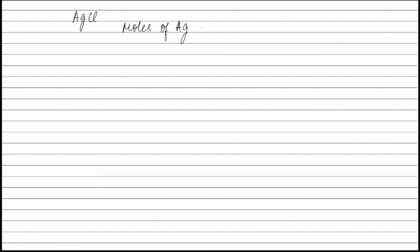The molecular formula of silver chloride is AgCl. Therefore moles of silver equals moles of chlorine. Moles of silver equals weight of silver (3.531g) divided by atomic weight of silver Z, and this equals weight of chlorine (1.156g) divided by atomic weight of chlorine 35.5. Solving this we get the value of Z equal to 108.